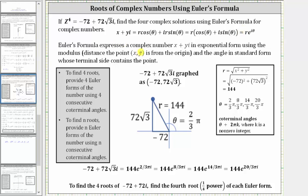Euler's formula expresses a complex number in the form x plus yi in exponential form, which is r times e raised to the power of i theta, where r is the modulus — the distance the point x, y is from the origin — the same r as in polar form, and theta is the angle in standard position whose terminal side contains the point x, y.